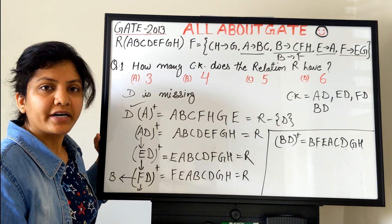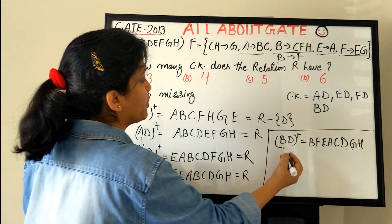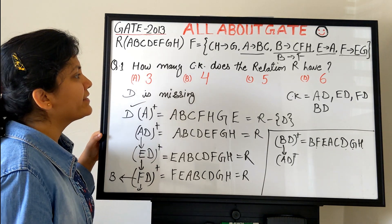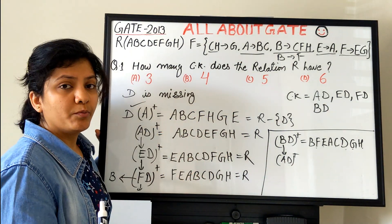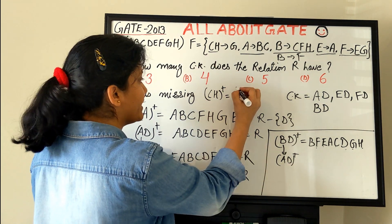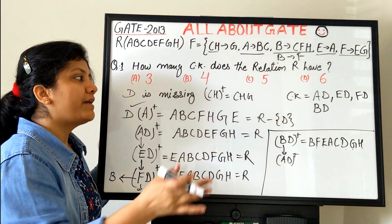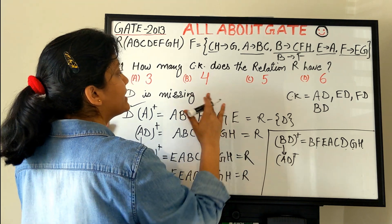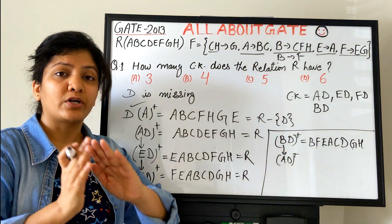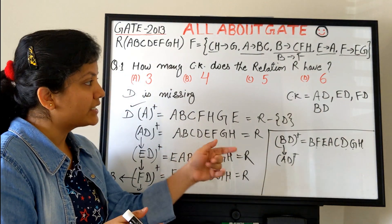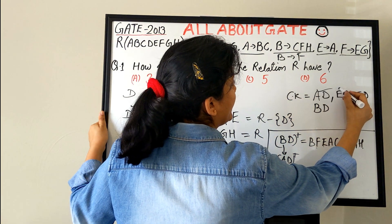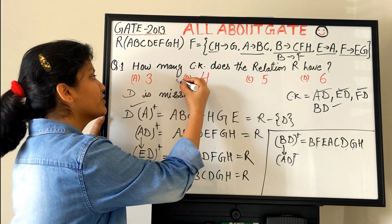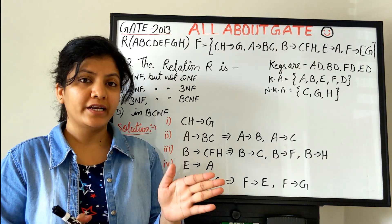Checking if B is determined by anything — it would lead back to A, which is already covered, creating a cycle. No further candidate keys are possible. Someone might try CH+ but it only gives C, G, H, so it's not useful here. We conclude there are exactly four candidate keys: AD, ED, FD, and BD. The answer is four candidate keys.